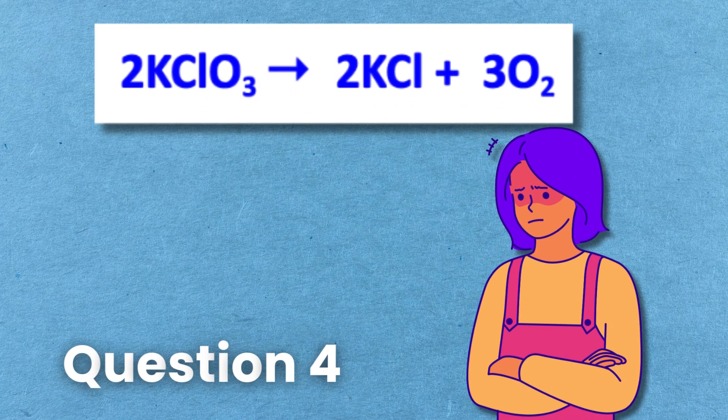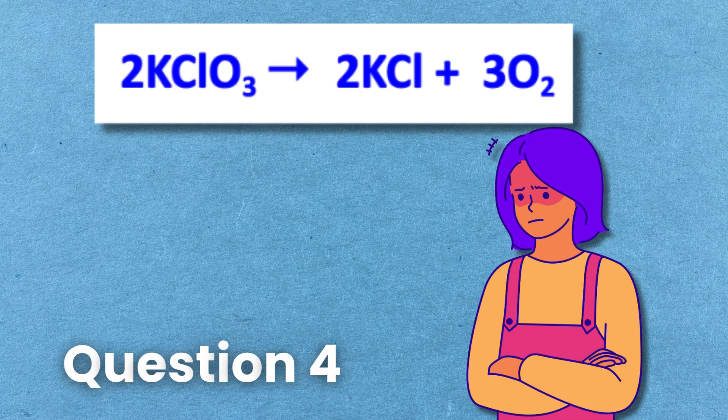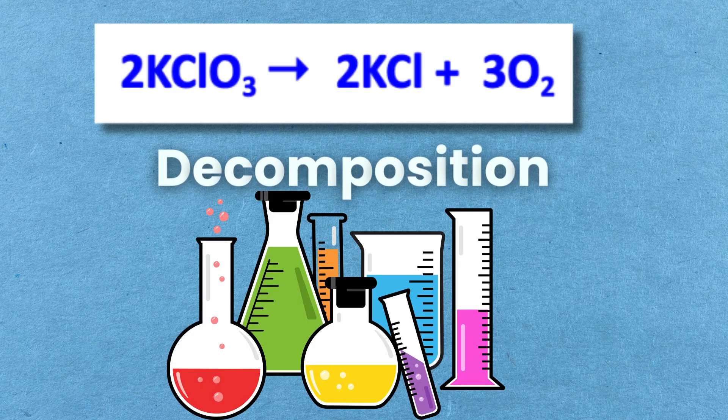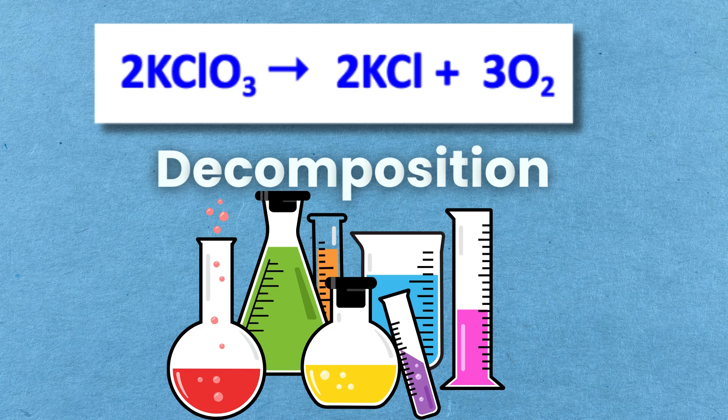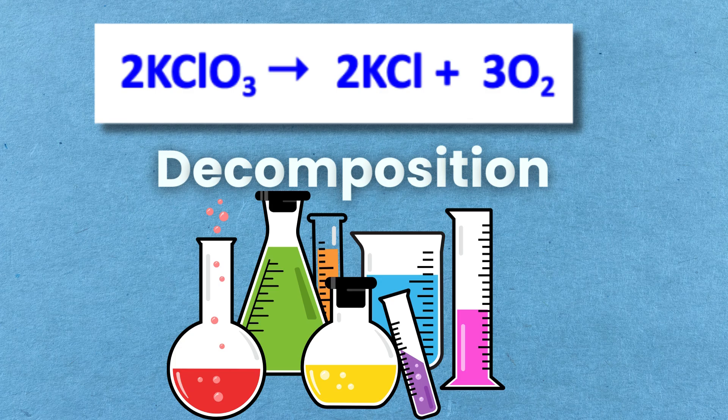2KClO3 gives 2KCl plus 3O2. Potassium chlorate decomposes into potassium chloride and oxygen. So, it's a decomposition reaction.